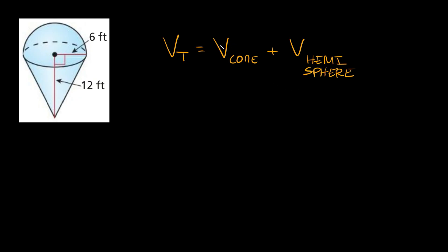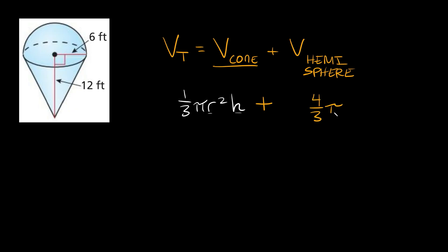The formula to find the volume of a cone is one-third times pi r squared h, where r is the radius of the cone and h is the height of the cone. Then we're going to add that to the volume of the hemisphere. The volume of a regular sphere is four-thirds pi r cubed, but a hemisphere is half a sphere, so we multiply the volume of a sphere by one-half.